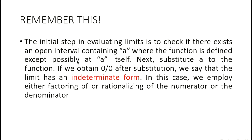Next, we substitute A into the function. If we obtain 0 over 0 after substitution, we can say that the limit has an indeterminate form. This is one of the special cases. When we get 0 over 0, that is an indeterminate form. When direct substitution yields an indeterminate form, we do not immediately say the limit does not exist. Instead, we employ either factoring or rationalizing of the numerator or the denominator.